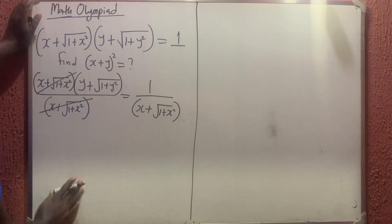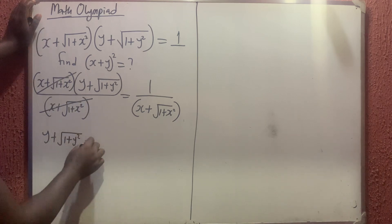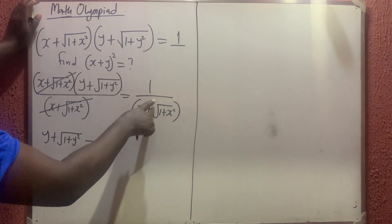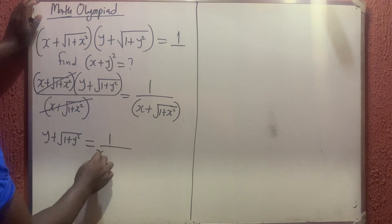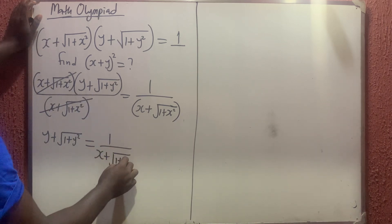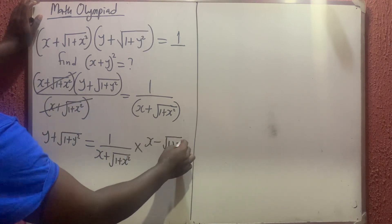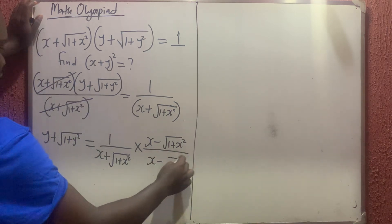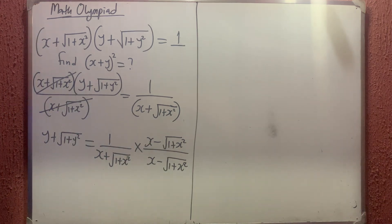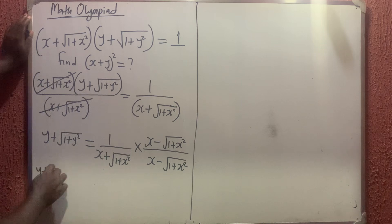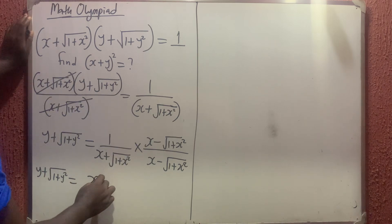Now, this cancels with this, so we have y plus the square root of 1 plus y squared equals 1 over x plus the square root of 1 plus x squared. To rationalize this, I'm going to multiply by the conjugate — we don't want a radical in the denominator. So I multiply by x minus the square root of 1 plus x squared over x minus the square root of 1 plus x squared.